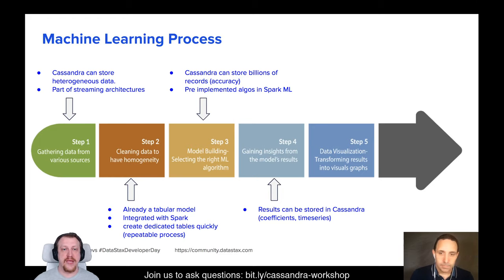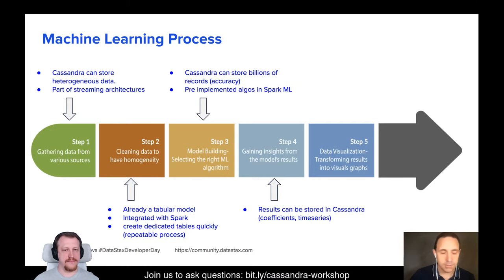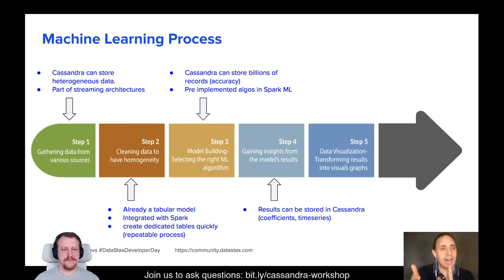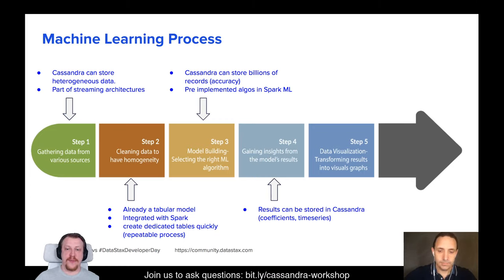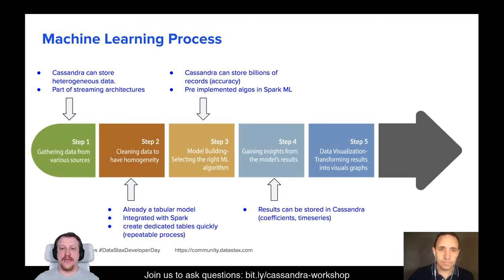As the next step, model building: select the machine learning algorithm, choose and prepare the model to work with your data. Working with the model, you can also store results back in Cassandra in separate tables, because output can be quite significant and you still want to store it quickly without delays. Finally, you use the results to see how well it worked, what you can predict, and how to improve your decisions based on the steps taken.